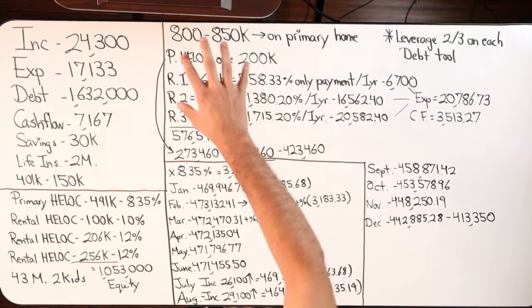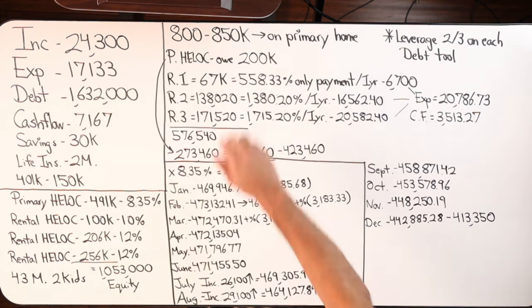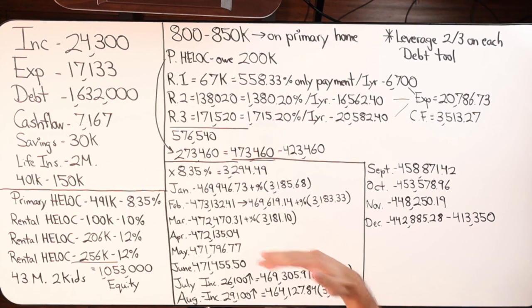Again, estimated budget is anywhere from as low as $800,000 to about $850,000. Now at the time of recording this video in December of 2023, this individual has already spent $200,000 toward the remodeling of the home. So we have another $600,000 to $650,000 to go.